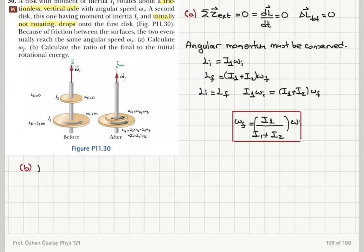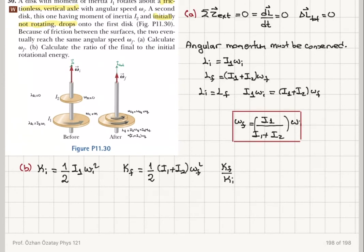Now let's look at part B — the ratio of the final to the initial rotational kinetic energy. The initial rotational kinetic energy is (1/2) I1 times omega initial squared. The final rotational kinetic energy is (1/2)(I1 + I2) times omega final squared. So K final divided by K initial equals (I1 + I2) times omega final squared divided by I1 times omega initial squared.